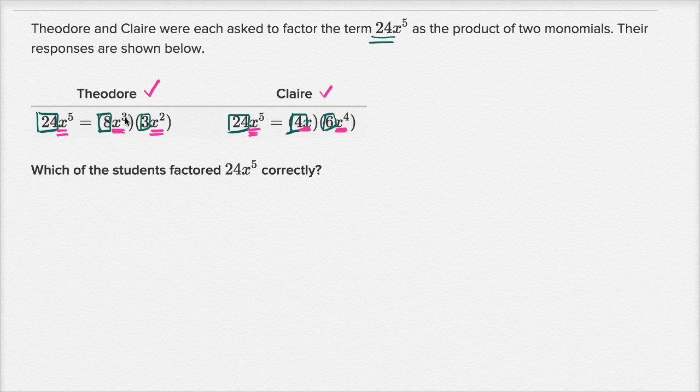And this just goes to show you that there's more than one possible factorization of a monomial like 24x to the fifth.